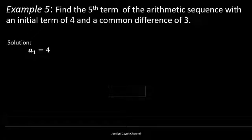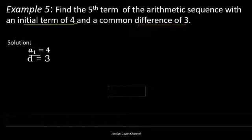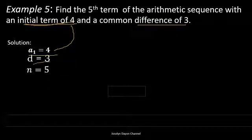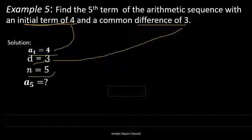Another example: find the fifth term of an arithmetic sequence with an initial term of 4 and a common difference of 3. Note that we are given the initial term and the common difference directly. So we determine the first term: based on the problem, the initial term is 4. The common difference is also given as 3. And n equals 5 because we are tasked to determine the fifth term.